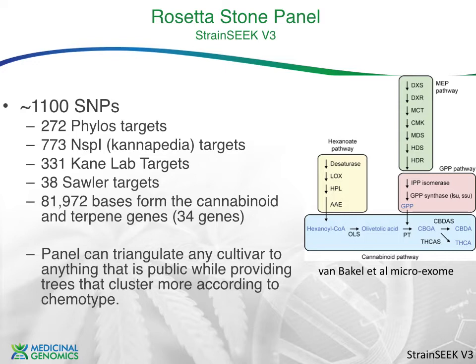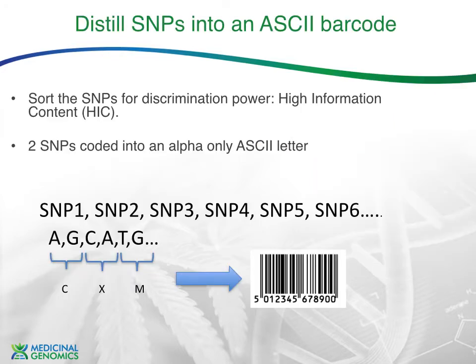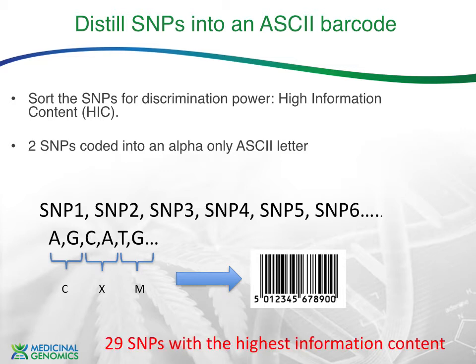Why do we want these markers? If every plant is just a list of SNPs — maybe 1,100 in the Rosetta Stone panel — that's a lot of information to put on a product barcode. But we can condense it greatly by running analysis to sort SNPs by highest discriminatory power. What are the most unique SNPs? When you do this, you can distill it down to under 30 SNPs that encode anything in Cannapedia. We can convert those 30 SNPs into maybe 15 letters or fewer using a dense code, such that a barcode could pinpoint your plant from a genomic standpoint right into Cannapedia.